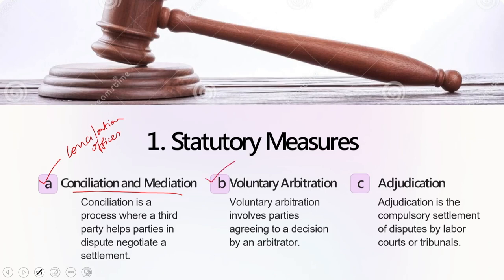We also have voluntary arbitration. Voluntary arbitration involves parties agreeing to a decision by an arbitrator. Arbitration means a procedure which involves a third party — in the form of a single arbitrator or a board of arbitrators — assigned with the duty to resolve the dispute between the parties. 'Voluntary' symbolizes self-willingness and consent given. So voluntary arbitration means that the parties involved in the dispute willfully agree to the decision taken by the arbitrator or board of arbitrators without any specific outside compulsion.